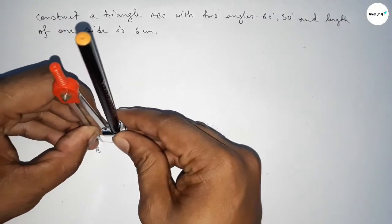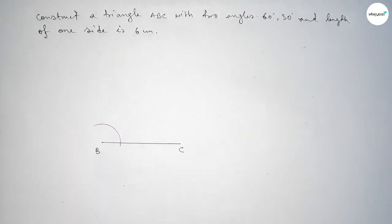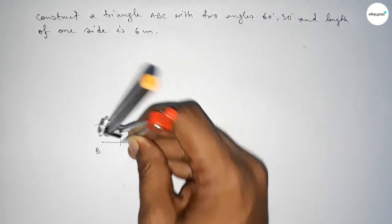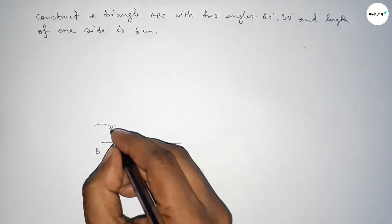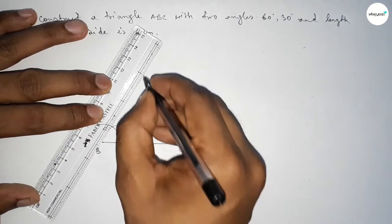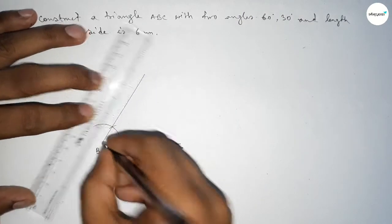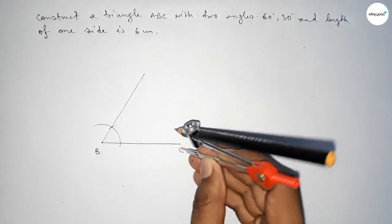Now drawing a 60 degree angle at point B. Putting the compass here and taking any length, drawing an arc, then putting the compass at the same point with the same length and cutting here so both curves intersect at a point. Joining this line to get a 60 degree angle.